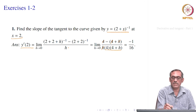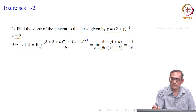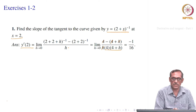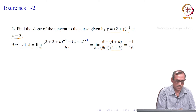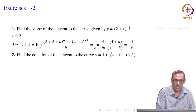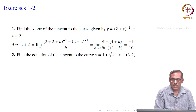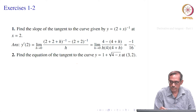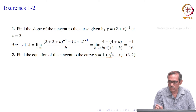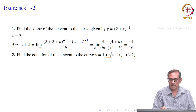So the slope of the tangent to the curve y equal to (2 plus x) to the power minus 1 at x equal to 2 is minus 1/16, since this derivative exists. We now take another problem where the function is given as y equal to 1 plus square root of (4 minus x).